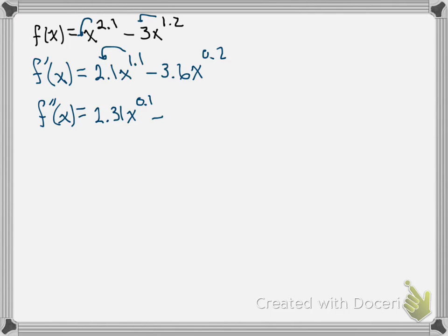Now we have to do the same thing here. We're going to do 3.6 times 0.2, which gives us 0.72x, and now decreasing the power by 1 is okay, it just gives us a negative exponent, x to the negative 0.8.